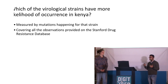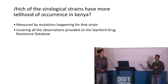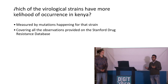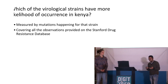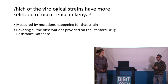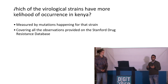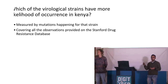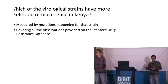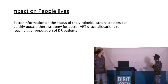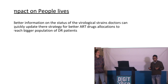We will first go through the situation using the Stanford database, from which we collected all the drug resistance data available. After doing the analysis, we will explain what model we are trying to use to get the likelihood of each of those virological strains happening specifically for Kenya, and what impact this can have on the people living there.